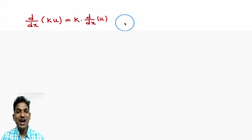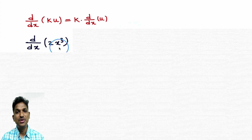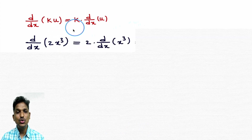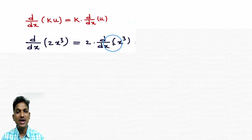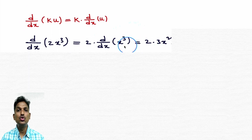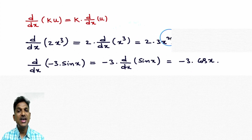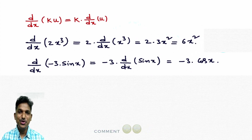Let's see how we apply this formula in basic differentiation. d/dx of 2x cube — here 2 is constant and x cube is the function. This is like ku. As per the formula, write it as 2 into d/dx of x cube. Derivative of x cube is 3 into x square. Simplifying: 2 into 3 gives 6x square.